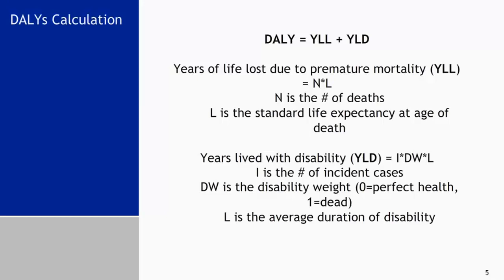The second part is a little more challenging. The years lived with disability is calculated by multiplying the number of incident cases of disease by the disability weight and the average duration of disability. These are hard numbers to find. The incident number of cases of a specific disease or disability must be informed by either public health information systems or other studies specifically designed to estimate incidence. The disability weights are agreed upon by experts in DALY estimation. And finally, the average duration of disability is a very challenging estimate that often requires unique data sources.